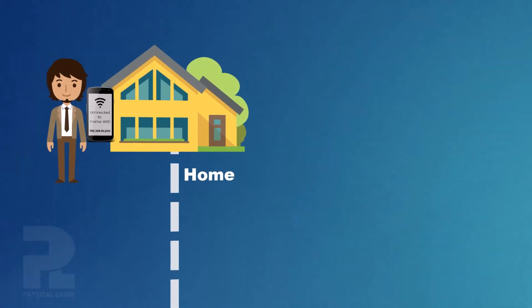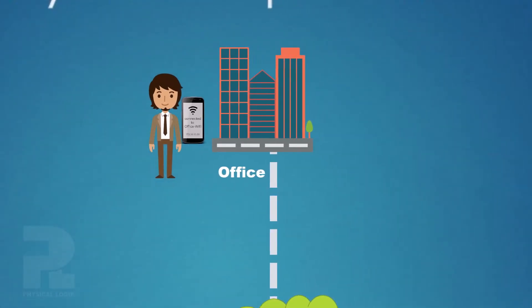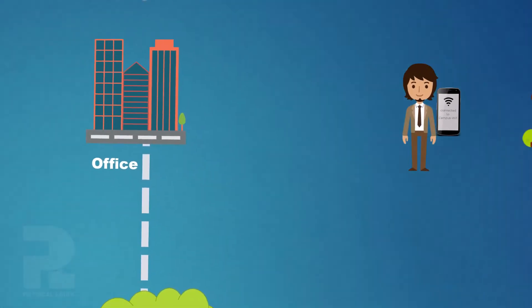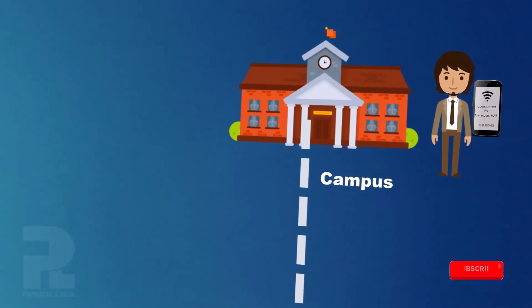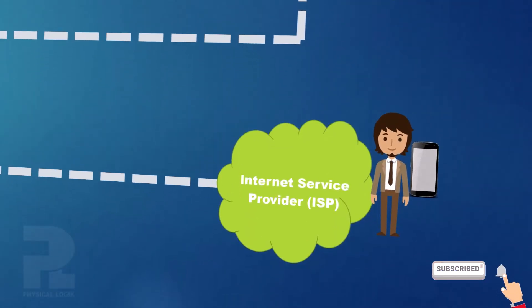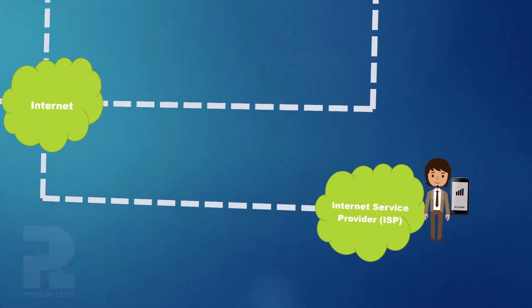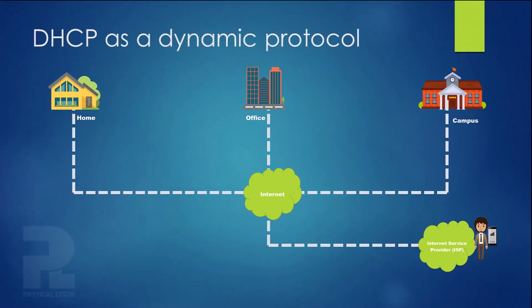Moving to the office, you get a new IP address. Move to the campus, you get another IP address. Connecting to the internet through your ISP's network also delivers IP configuration to your device using DHCP. This means your device's network configuration automatically changes to fit the new environment easily without the user having to reconfigure.